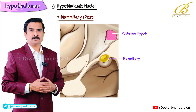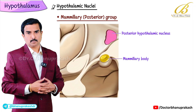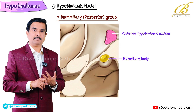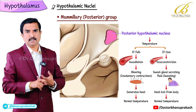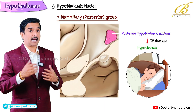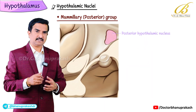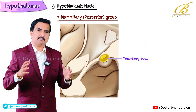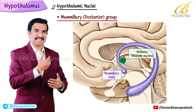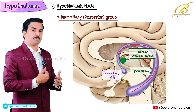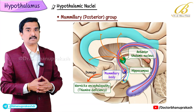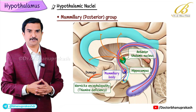The next group is the mammillary group, also called the posterior group, which includes the posterior hypothalamic nucleus and the mammillary body. The posterior hypothalamic nucleus conserves heat via sympathetic activity and damage here can cause hypothermia. The mammillary body is essential for episodic memory — it receives signals from the hippocampus and projects to the anterior thalamic nucleus. Damage here causes Wernicke's encephalopathy, which is seen in thiamine deficiency.